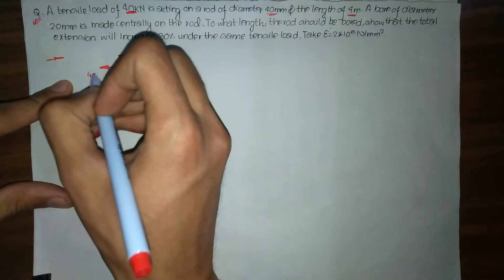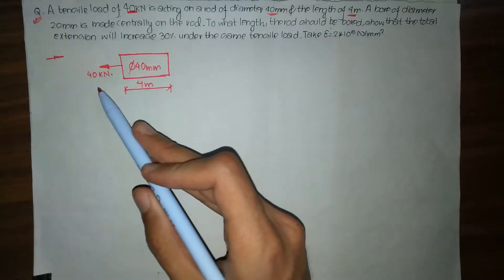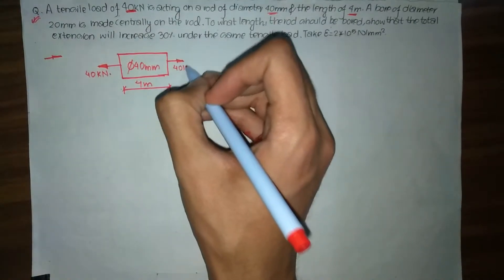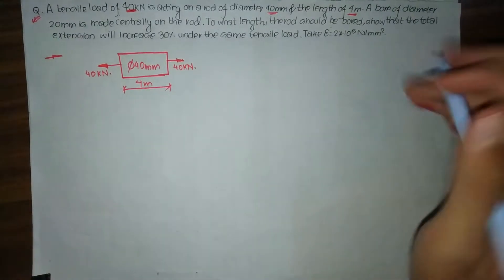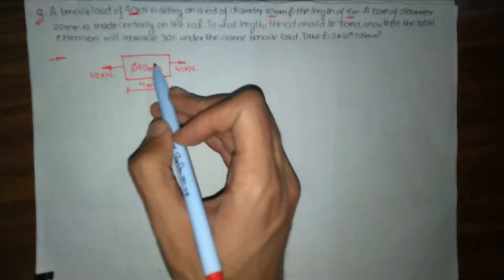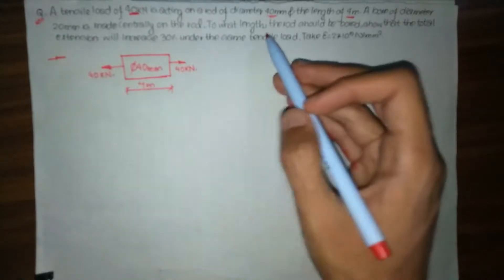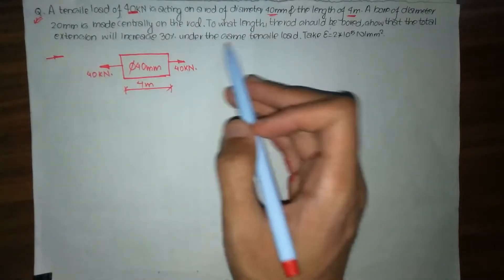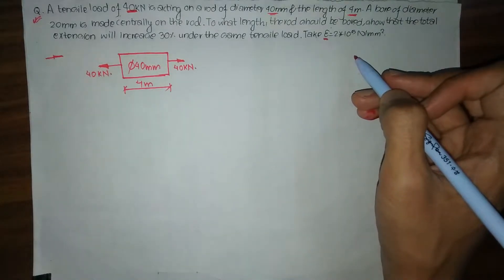In this side a tensile load of 40 kN is acting. Since a tensile load of 40 kN is acting in the left direction, in order to maintain equilibrium another tensile force of 40 kN must also act at the right. Now continuing: a bore of diameter 20 mm is made centrally on the rod, and Young's modulus E equals 2 × 10⁵ N/mm².